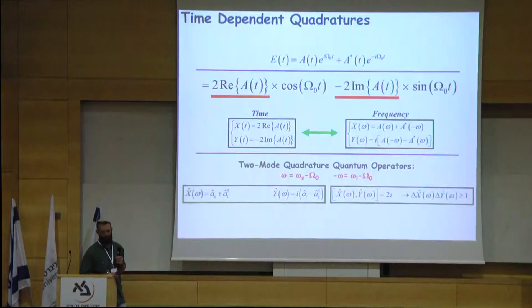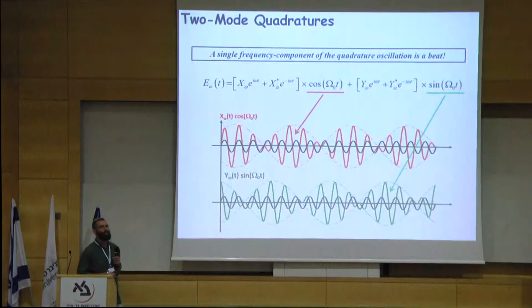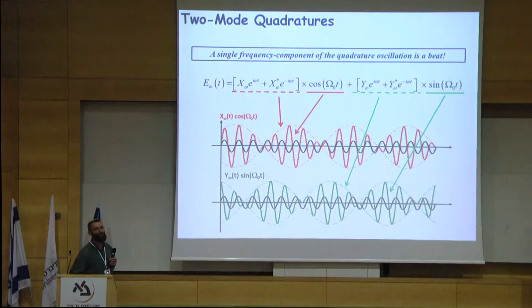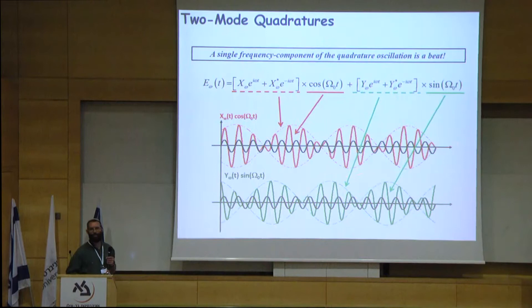What does a single frequency component of the quadrature look like in time? Well, it's an equal superposition of two frequency modes — it's a beat. What distinguishes between the two quadratures is not the envelope of the oscillation. Rather, it is the carrier phase, the phase of the optical carrier frequency. For the x quadrature, the carrier phase is always either 0 or pi. And for the y quadrature, the carrier phase is always either plus or minus pi over 2.